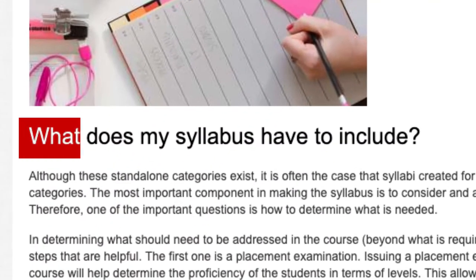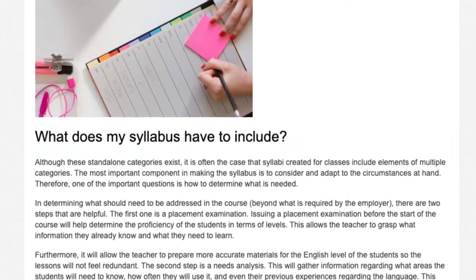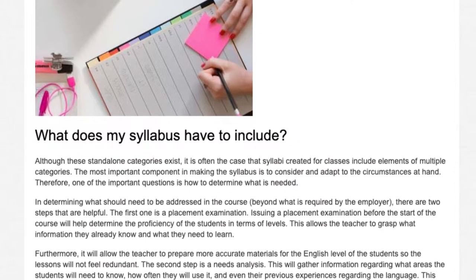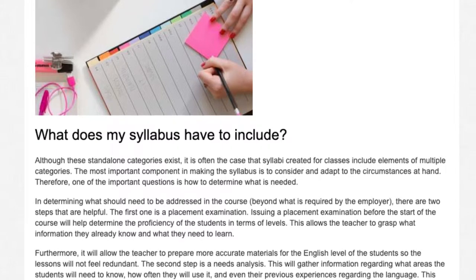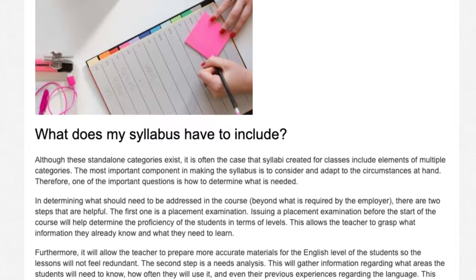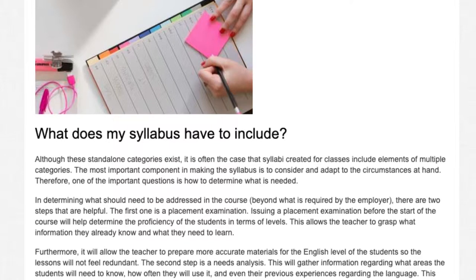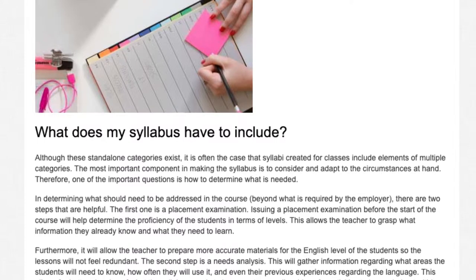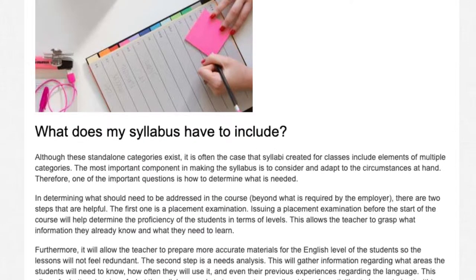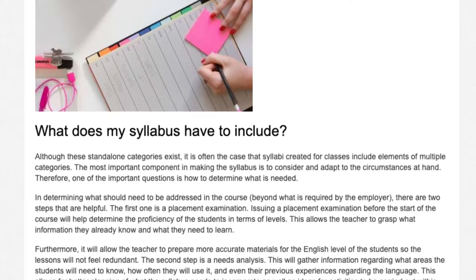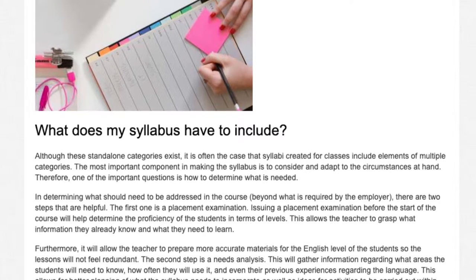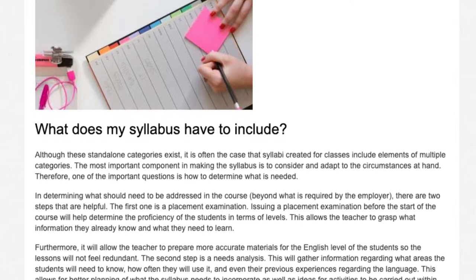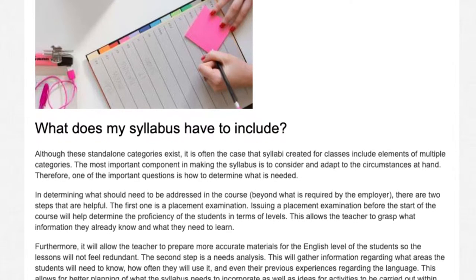Although these stand-alone categories exist, it is often the case that syllabi created for classes include elements of multiple categories. The most important component in making the syllabus is to consider and adapt to the circumstances at hand. Therefore, one of the important questions is how to determine what is needed. In determining what should be addressed in the course, beyond what is required by the employer, there are two steps that are helpful.